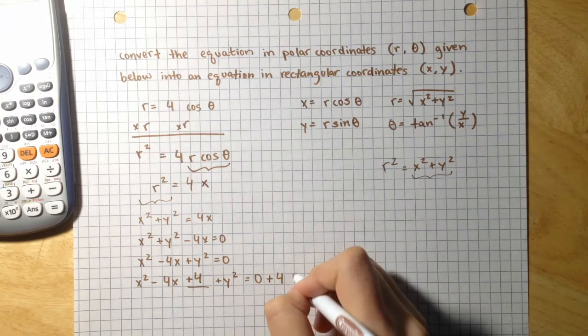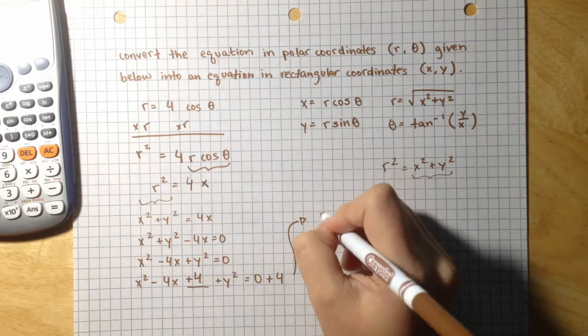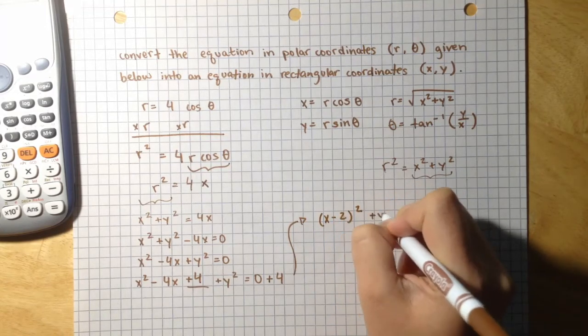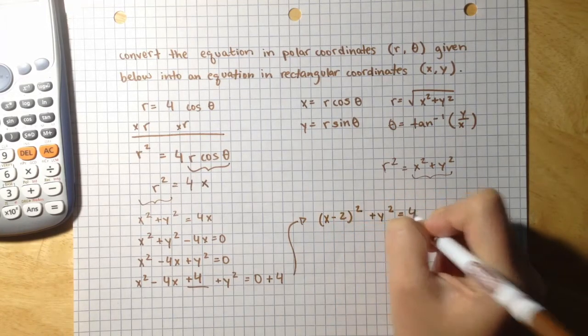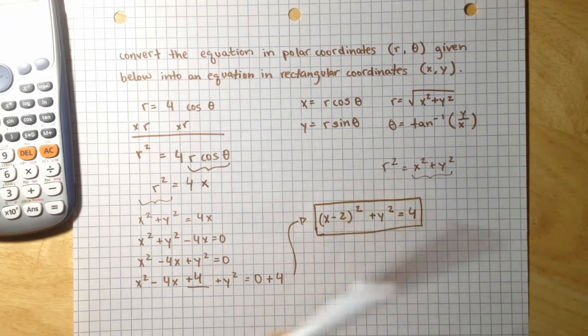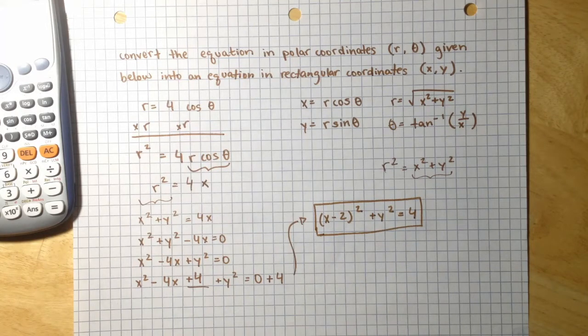So, writing this in the standard equation form of a circle. x minus 2 squared plus y squared equals 4. And this is actually our final answer. This is how you would write this equation in terms of x and y in rectangular coordinates.